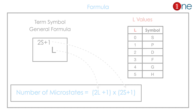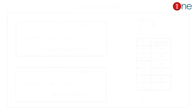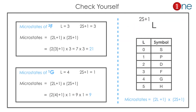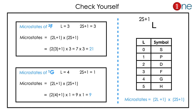Here is a problem to practice. The first term symbol is ³F. Here F means L equals 3, and 2S+1 is already given as 3. So the number of microstates is (2×3+1) × 3 = 7 × 3 = 21.